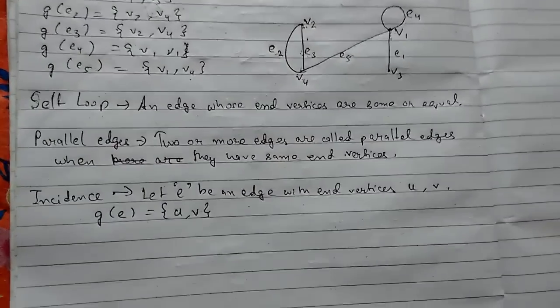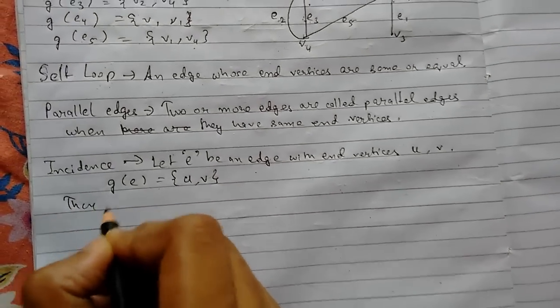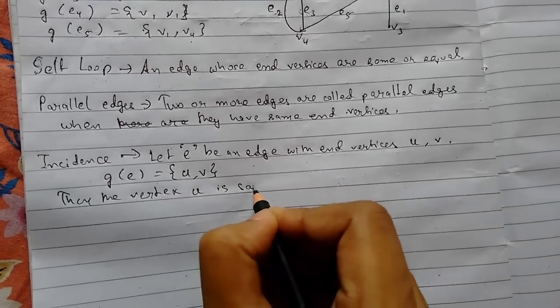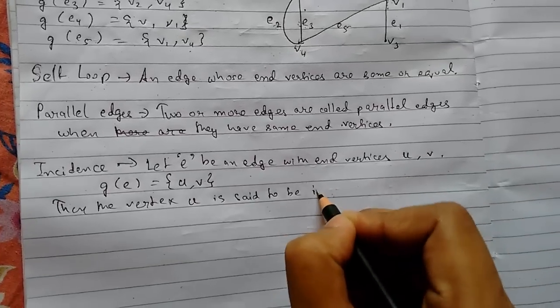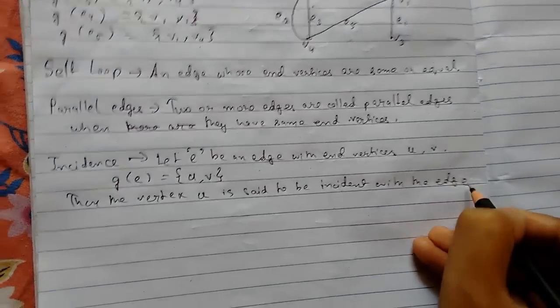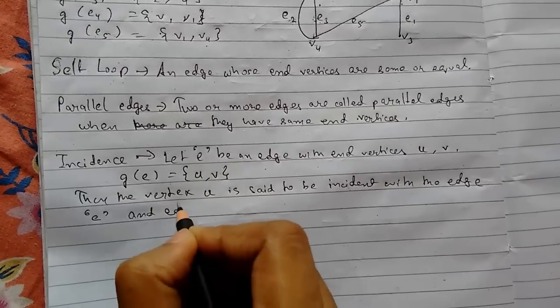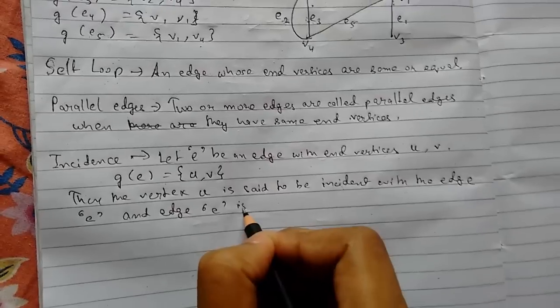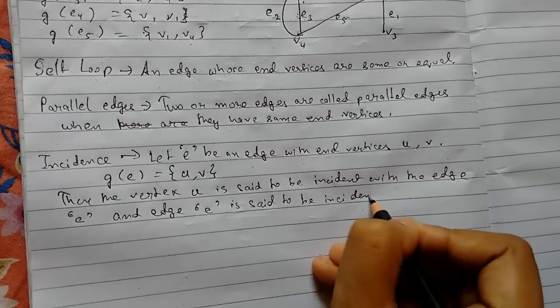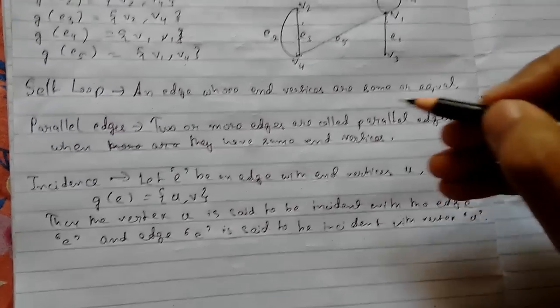Set of edges with vertices u and v. Then the vertex u is said to be incident with the edge e. And edge e is said to be incident with vertex u. So this is pretty simple.